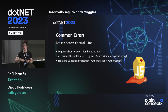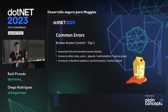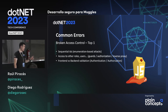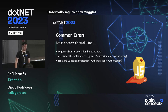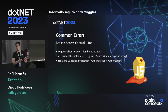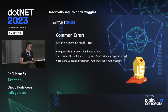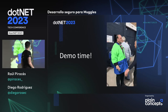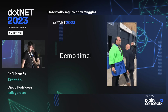Hay que evitar dejar al usuario o a un posible mal actor enumerar todos los artículos de nuestra base de datos. Tenemos que hacer siempre validación de autenticación y autorización, tanto en front como en back. Back es obligatorio; en front, como es código ejecutado por el cliente, siempre va a ser más vulnerable.